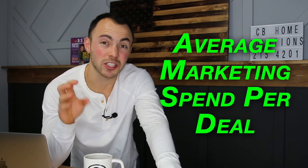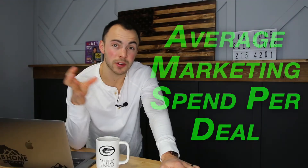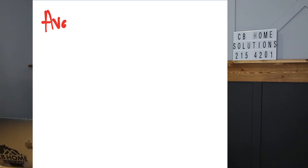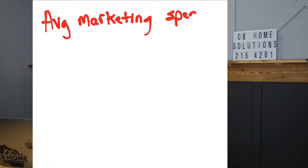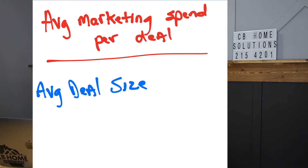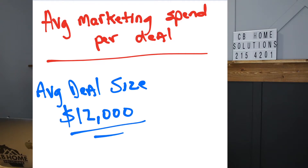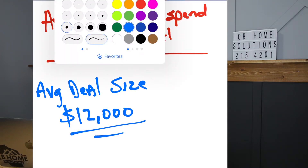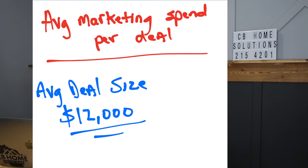The first thing we need to calculate is an average spend we can have per deal that we generate. So let's jump onto the iPad right now and calculate this out. First, going into the average marketing spend per deal — an average deal size is the first thing that we need to identify in our exact marketplace. In Milwaukee, we're going to shoot for an average assignment of $12,000 per assignment.